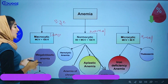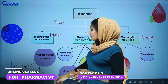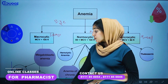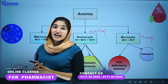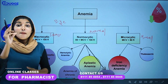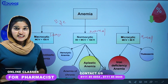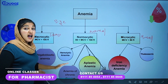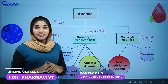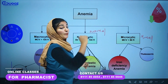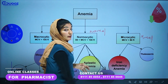The classification of anemia: macrocytic anemia is called megaloblastic anemia. It is divided into folate deficiency anemia and vitamin B12 deficiency anemia. Vitamin B12 deficiency anemia is called pernicious anemia. Normocytic anemia is classified as hemolytic anemia, anemia of chronic disease, aplastic anemia, and sickle cell anemia. Microcytic anemia is divided into iron deficiency anemia and thalassemia.